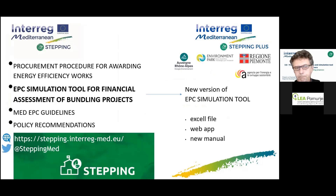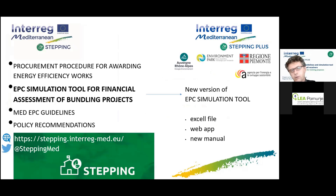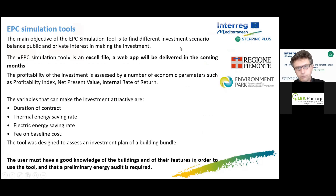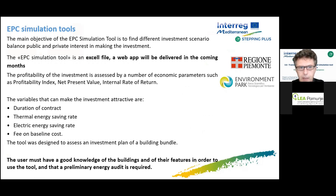This is the output of the first STEPPING project, together with other documents and tools. Now during STEPPING Plus, we are working to provide a new version of the APC simulation tool, which will be composed of an updated Excel file, a web app, and a new user manual. In the first version defined during the STEPPING project, the APC simulation tool was an Excel file that can help to define the economic indicators needed to determine the contract conditions of an EPC.